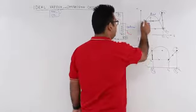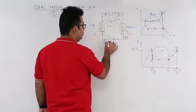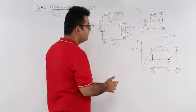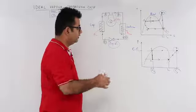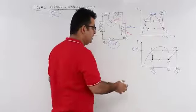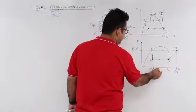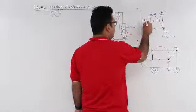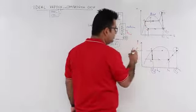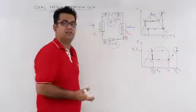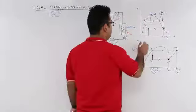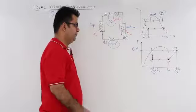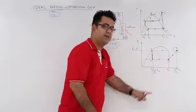From state 3 to 4 you pass through the expansion valve. We assume that during this expansion the enthalpy remains the same, but there is an increase in entropy because the expansion is taking place — so S3 increases to S4 while the enthalpy stays constant.